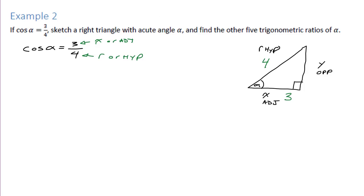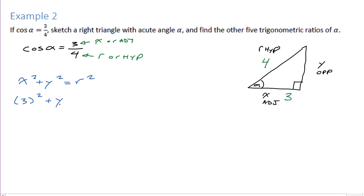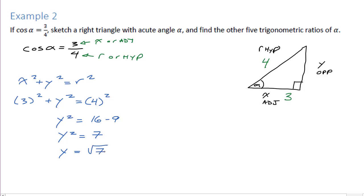We're missing the third side, but we don't need trigonometry — we'll use Pythagorean theorem. x² + y² = r², so 3² + y² = 4². That gives 9 + y² = 16, so y² = 7. Taking the square root and ignoring the negative, y equals √7. Let's leave it in exact form and go label that on the triangle. Now I know all three sides.